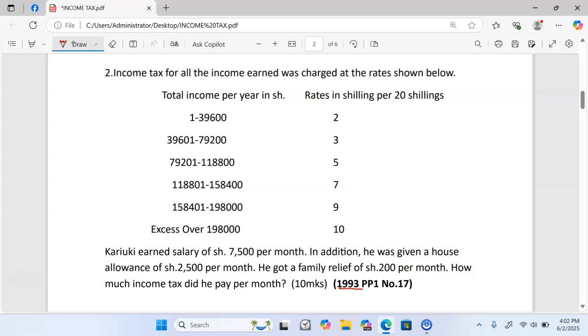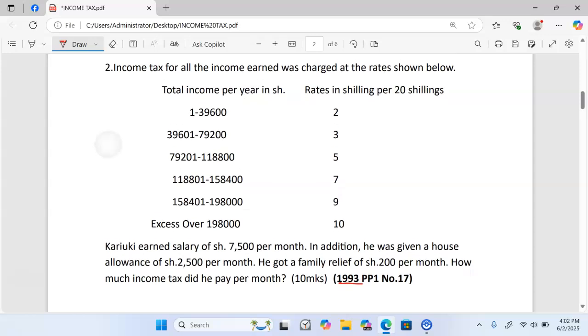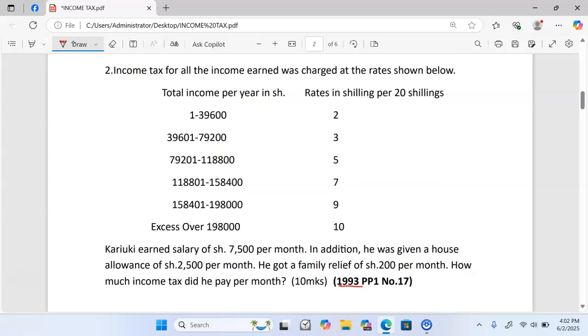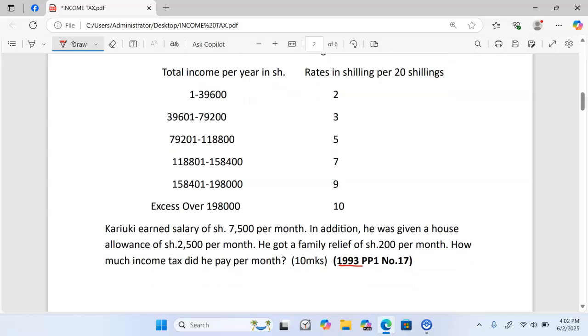The question reads: income tax for all the income earned was charged at the rates shown below. We have the table for the total income per year in shillings and the rates in shillings per every 20 shillings. The question further says Kariuki earned a salary of shillings 7,500 per month. In addition, he was given house allowance of shillings 2,500 per month. He got a family relief of shilling 200 per month. How much income tax did he pay per month? 10 marks.